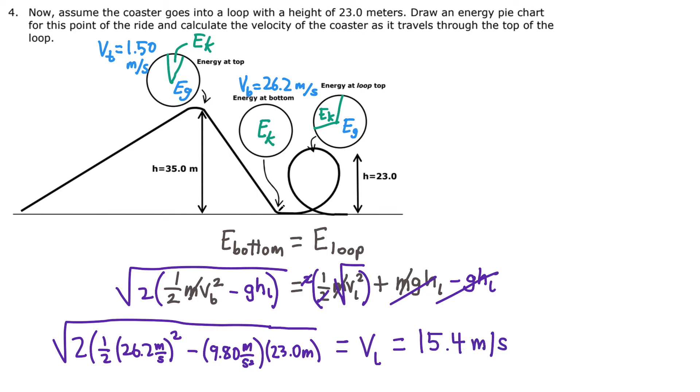That should make sense. It was going 26.2 meters per second here; as it goes uphill, it's going to slow down, so the velocity at the top of the loop will be less. Hopefully those problems demonstrate how you can use the concept of conservation of energy to solve problems that would be very difficult or even impossible using a force diagram approach. If you have any questions, please post them in the comments below. Thanks for watching.